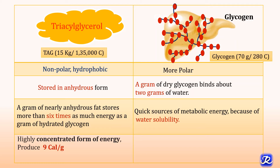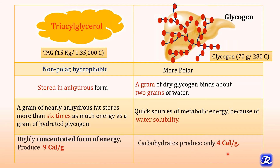TAG is a highly concentrated form of energy. It produces 9 kilocalories per gram on oxidation, while glycogen breakdown produces only 4 kilocalories per gram. There are two main reasons for fat being the major fuel reserve of the body: first, TAG is a highly concentrated form of energy producing 9 kilocalories per gram on oxidation compared to carbohydrates which produce just 4 kilocalories per gram, because the fatty acids in TAG are in reduced form. Second, TAG does not require water for its storage, whereas glycogen does.